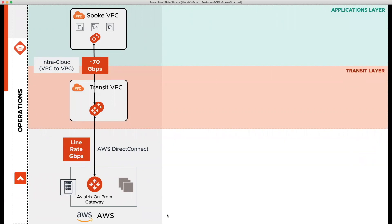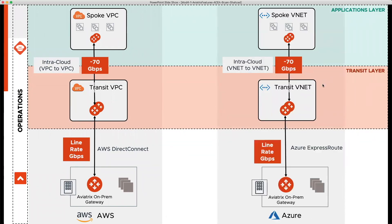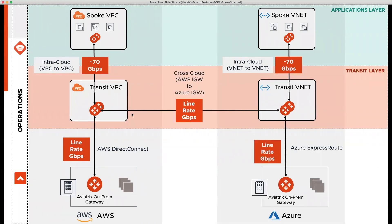The same is true for other clouds and for ExpressRoute scenarios. When you're connecting clouds together — for example AWS to Azure — it's again line rate. Whatever throughput these providers supply or throttle with, we honor that and give you line-rate encrypted performance.